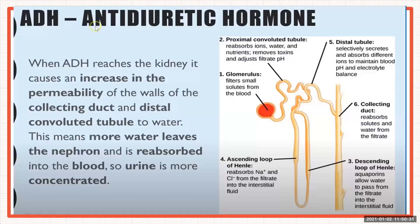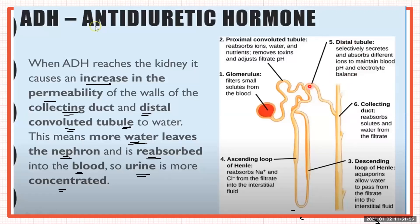When antidiuretic hormone reaches the kidney, it binds to its specific receptors there. It causes an increase in the permeability of the walls of the collecting duct and the distal convoluted tubule. Because of this increased permeability, more water leaves the nephron and is reabsorbed into the blood, producing more concentrated urine. The receptors in the distal convoluted tubule and collecting duct are called aquaporins.